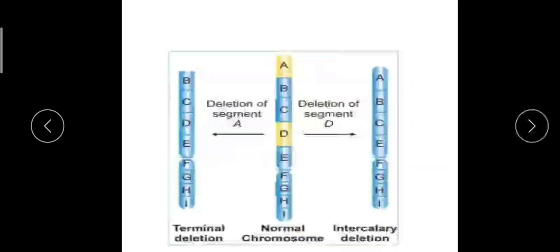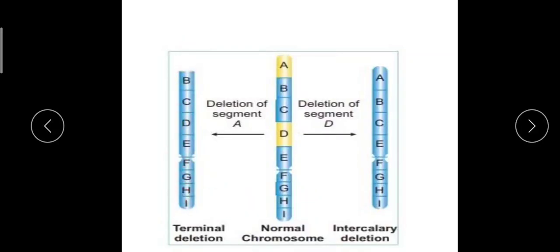Looking at this figure: this is a normal chromosome with segments labeled a, b, c, d, e, f, g, h, i. Here the terminal portion 'a' is deleted — the chromosome now starts from b, c, d and so on up to i. This type of deletion, where a terminal portion is removed, requires only a single cut, so terminal deletions occur through a single break.